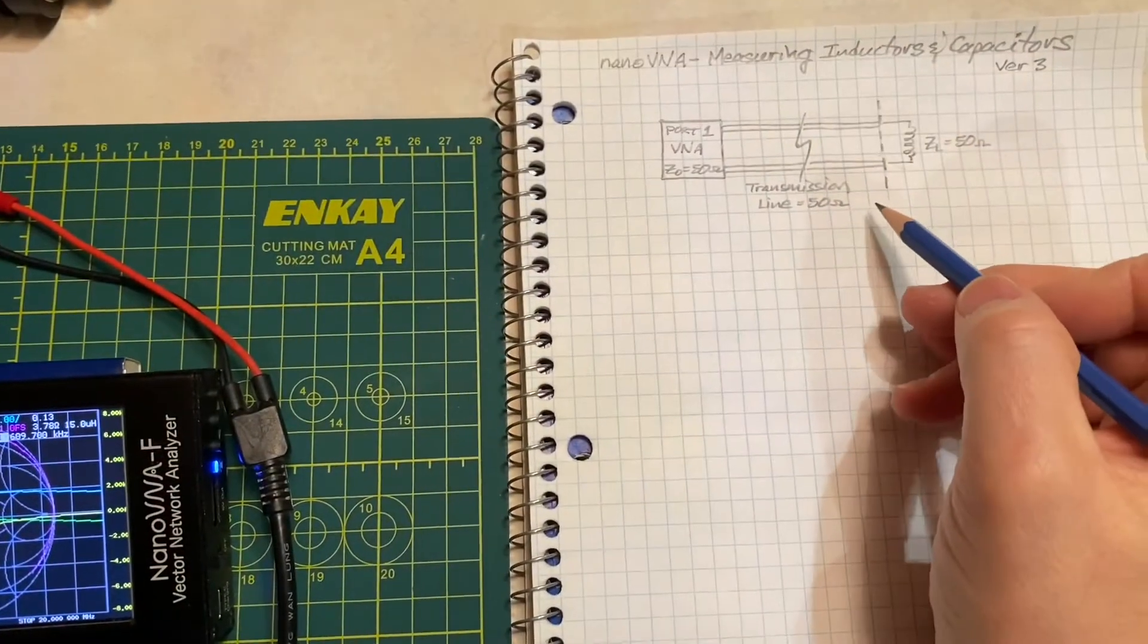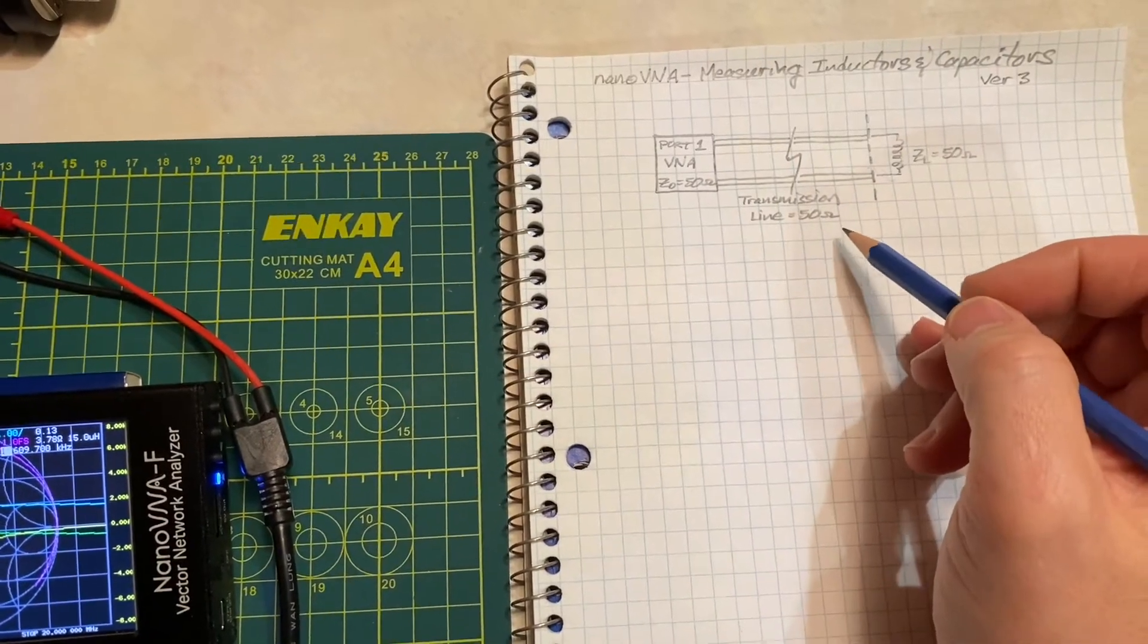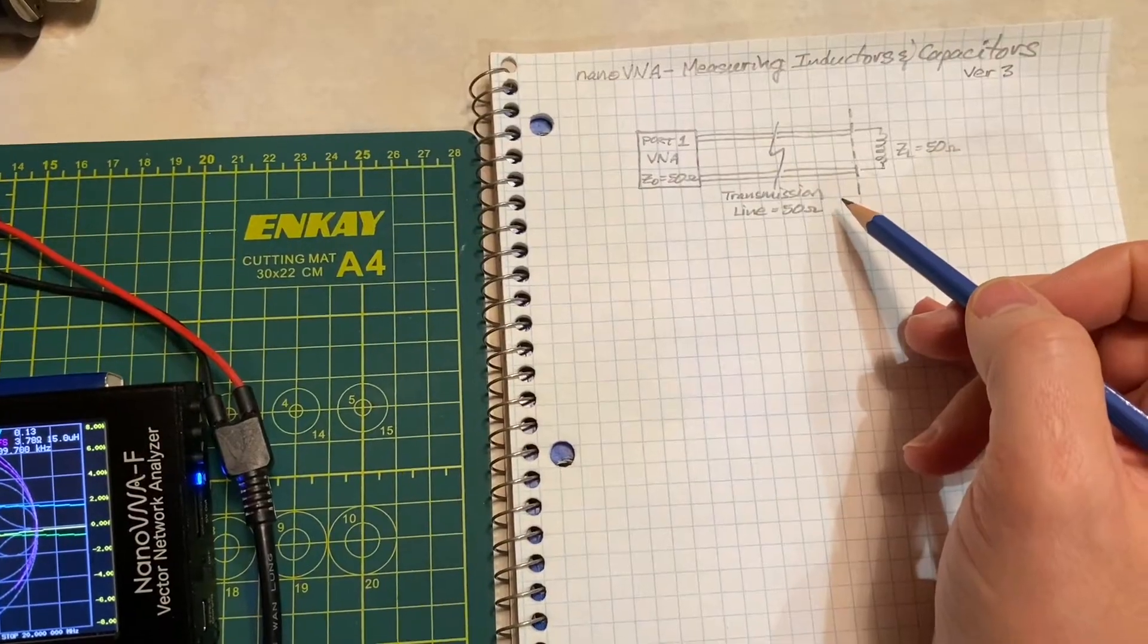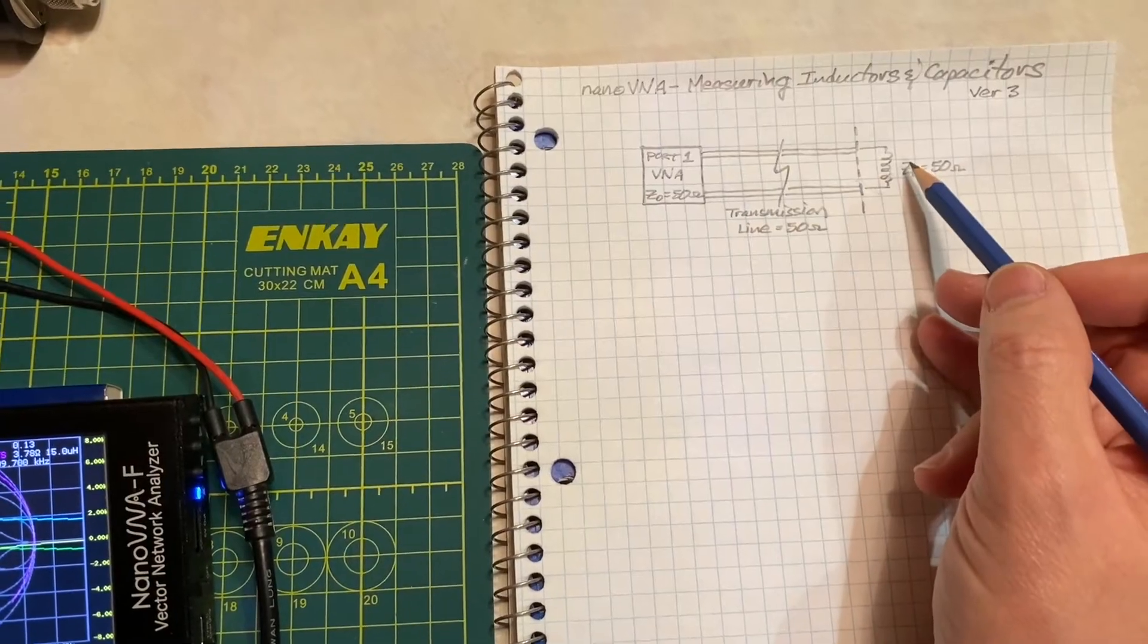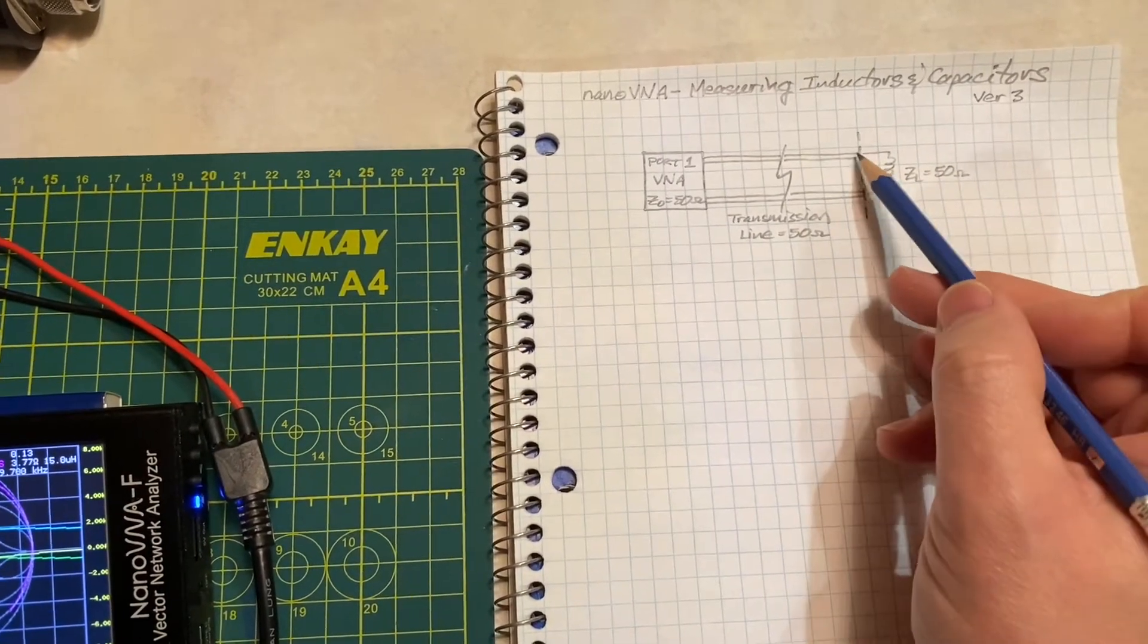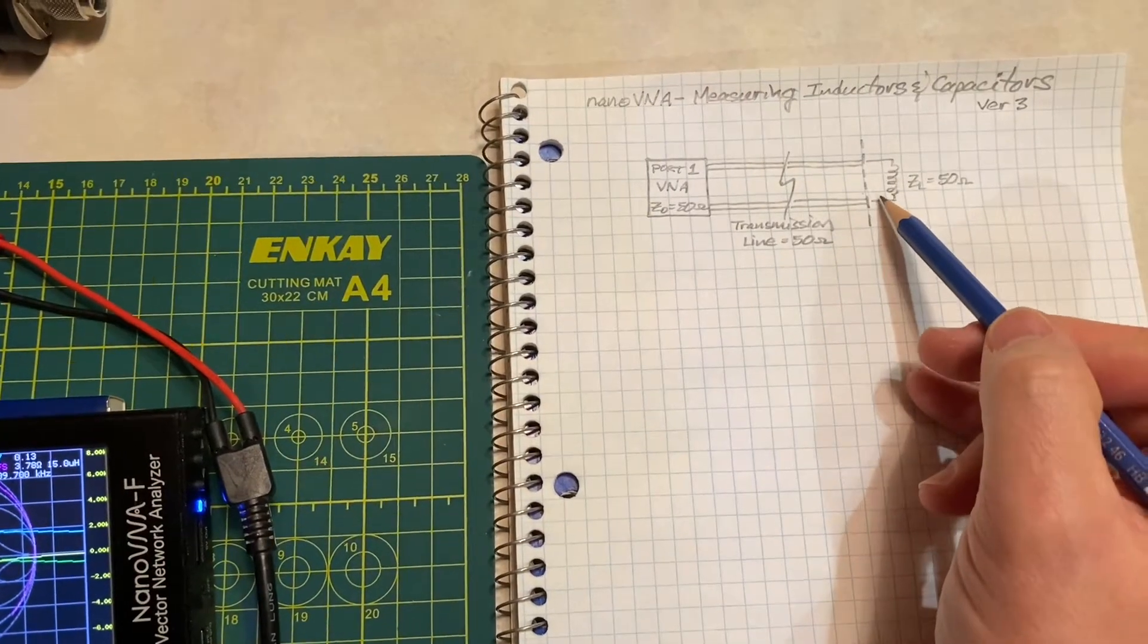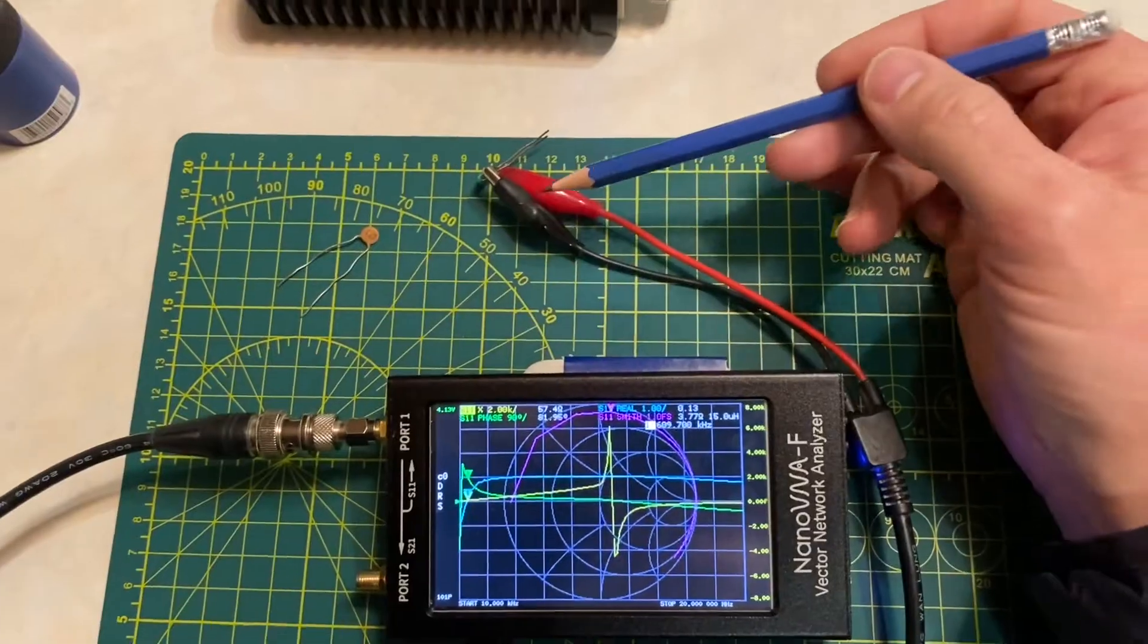There are three different configurations a person can use with the Nano VNA to perform this test: a shunt, a shunt-through, and a series. I've chosen the shunt method because it's the simplest and allows me just to use alligator clips. There's no test fixture or anything special.